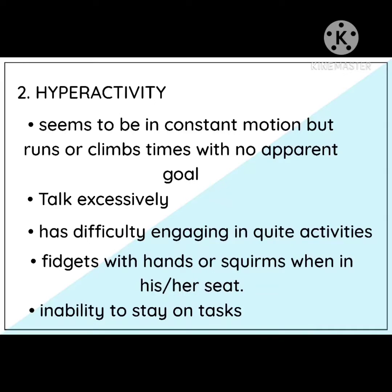Has difficulty engaging in quiet activities — since they tend to be talkative or restless, they find it hard to engage in quiet activities. They fidget with their hands or squirm when in their seat, constantly reaching out and touching whatever is around them. They also have an inability to stay on task — when given a task by a teacher or parent, they cannot stay focused or steady on that one task.